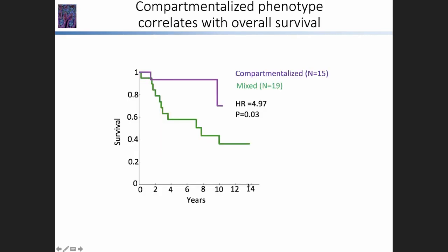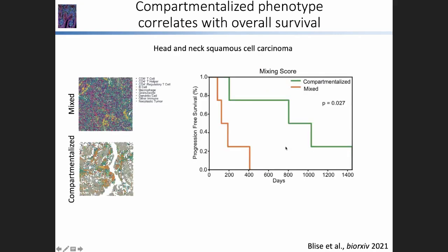One important question is whether this is prognostic — and yes, patients with compartmentalized tumors tend to do much better in terms of survival. A new paper that came out recently applied a very similar approach in head and neck squamous cell carcinoma and also found that compartmentalized patients tend to do much better than mixed. We would like to propose that this may be a general architecture applicable across a variety of different tumors.